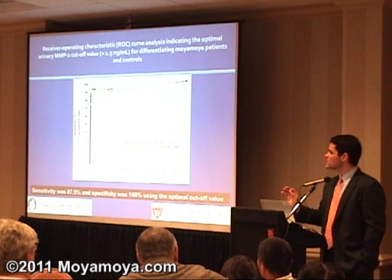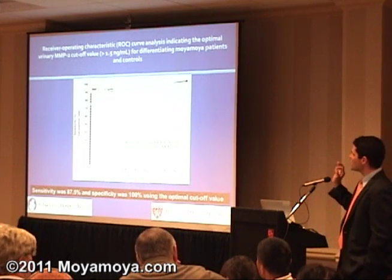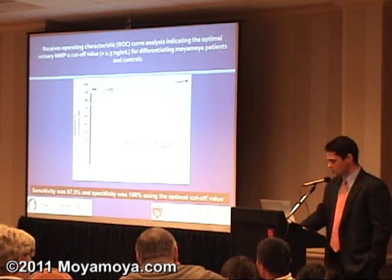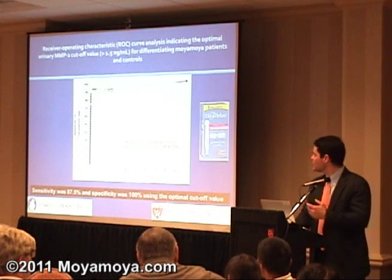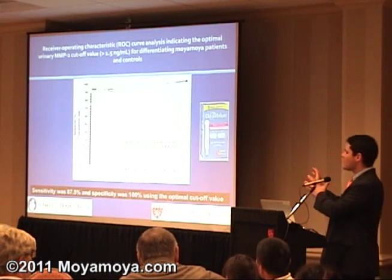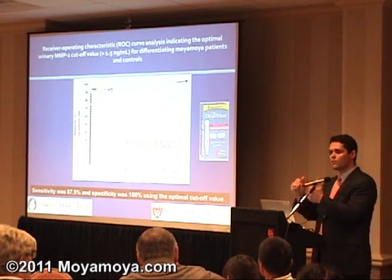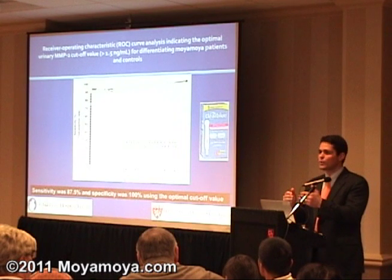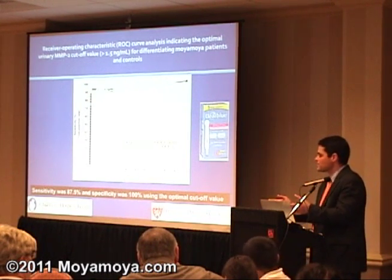What this means is you have an appropriate cut point. A cut point is basically — the smart statistician's concept — it's the same thing you have in a pregnancy test, where if it's over a certain level, you could say, gee, this is somebody you might want to think about getting a scan on.